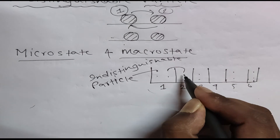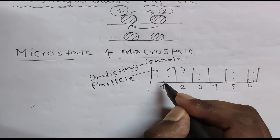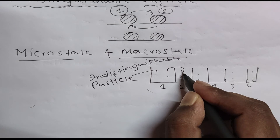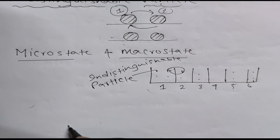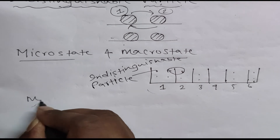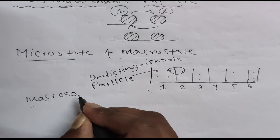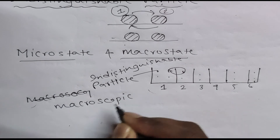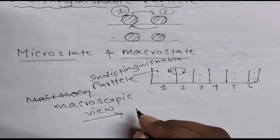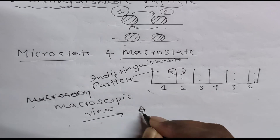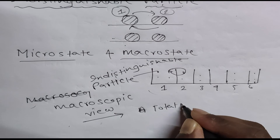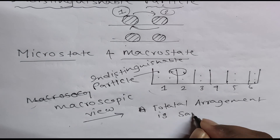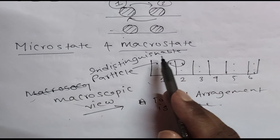After interchanging a ball from box one to box two and interchanging another ball to box one — in the macroscopic view, the total arrangement remains the same. So this is the macrostate.